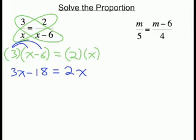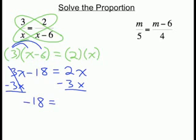Now we must move all the x's to one side. Because we have an x on the right side and an x and a number on the left side, we will move the positive 3 to the right side. So we subtract 3x from both sides. On the left side the x's cancel, leaving negative 18.